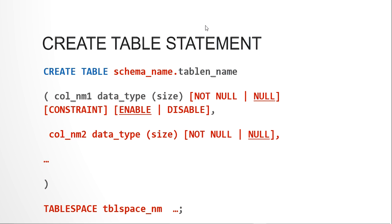The available data types include NUMBER, VARCHAR2, CHAR, DATE, TIMESTAMP, LONG, and many others. You choose the data type based on the kind of data to be stored. The NOT NULL keyword means you cannot insert a null value for that column — by default, if nothing is specified, null is allowed.